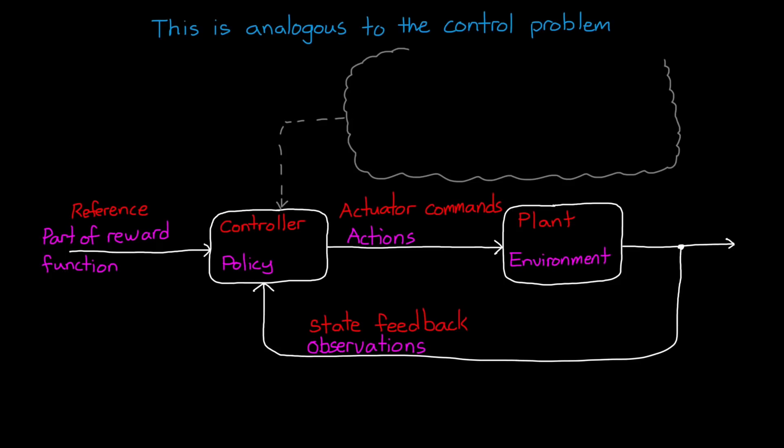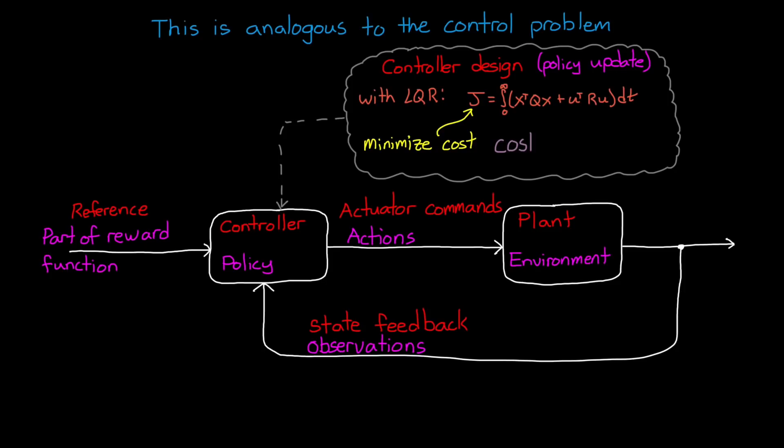And when we design a controller, we're basically doing a one-time policy update. And one of the ways that we can design an optimal controller is by minimizing a cost function, like we do with LQR. And cost is just the negative of reward, so by maximizing the reward, we're solving the same problem as minimizing cost.